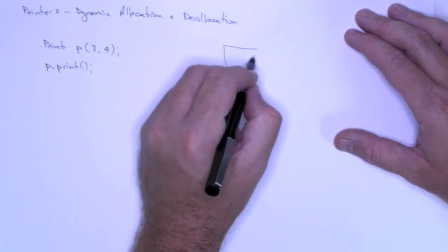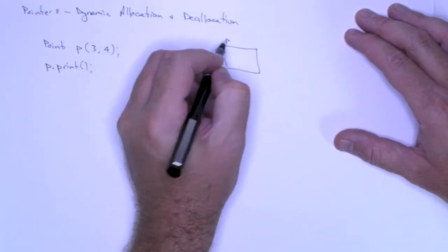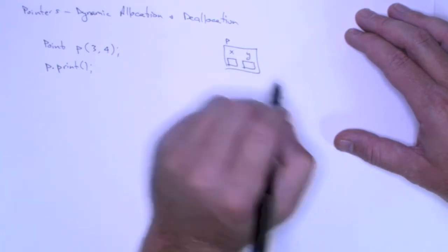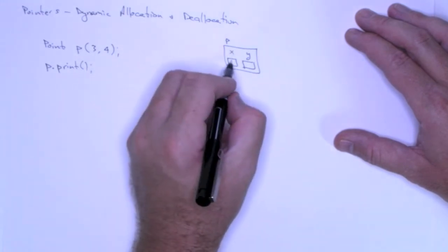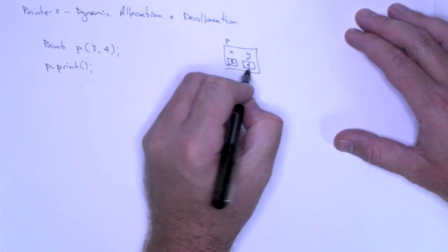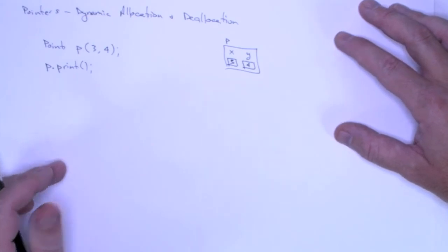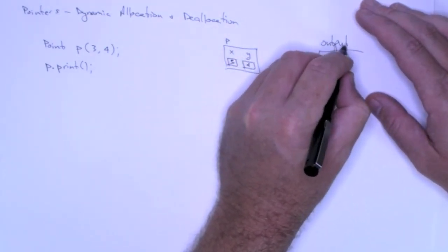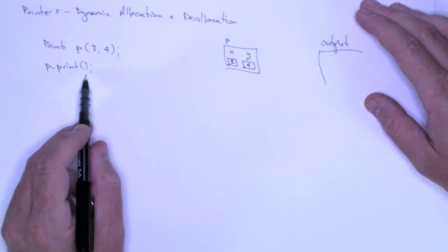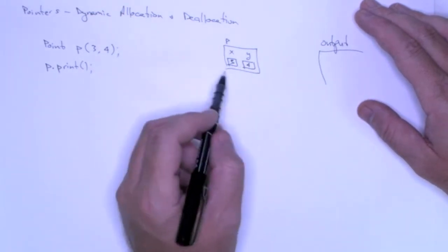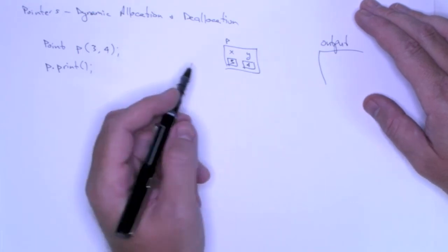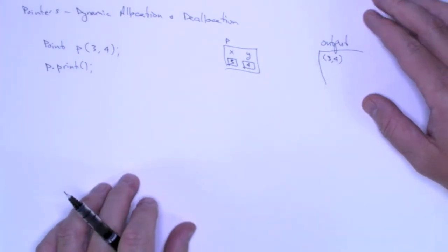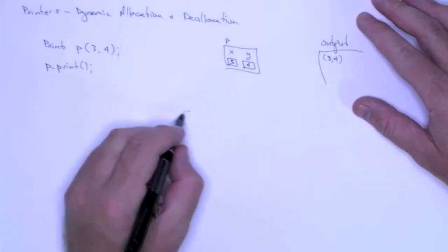Now, in terms of memory, I have this object p, it has 2 private data members, x and y. And the constructor takes those values and makes the correct assignments. Then in terms of the output, the print method, let's assume, prints this in a Cartesian coordinate format. So the output will be 3, 4.